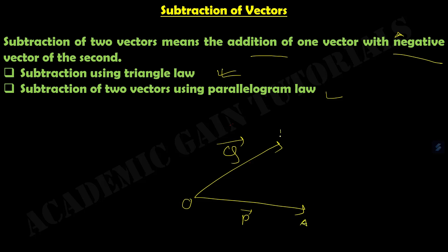The head arrow point of Q is at this point, and the head arrow of point A is at that point. If we connect these two, that gives us vector BA. Then BA equals P minus Q. This is known as subtraction using triangle law. The key point is: if we want to subtract Q from P, the vector arrow comes from Q to P. If we want to find AB, that will be Q minus P, and the direction will be from A to B.